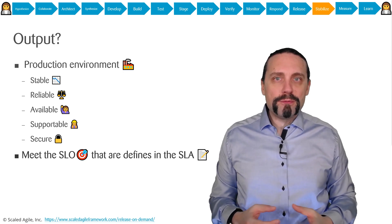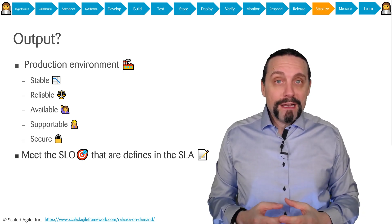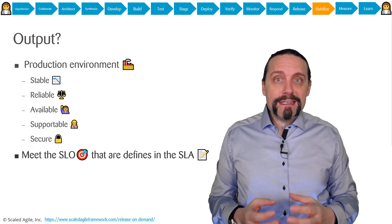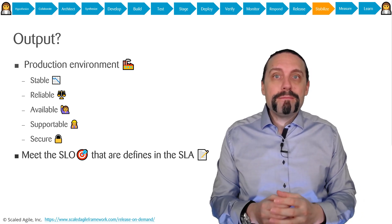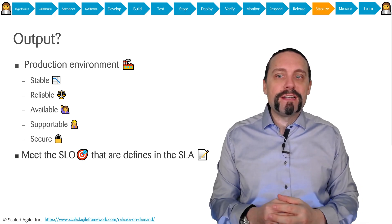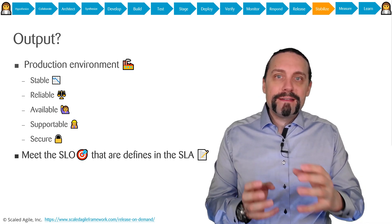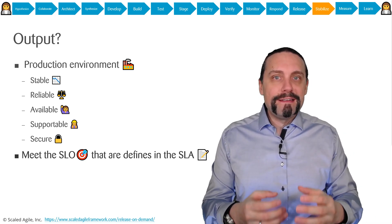So what is the output of the stabilize activity? The output is that we have a stable, reliable, available, supportable and a secure production environment which meets the SLOs that are defined in the SLAs.